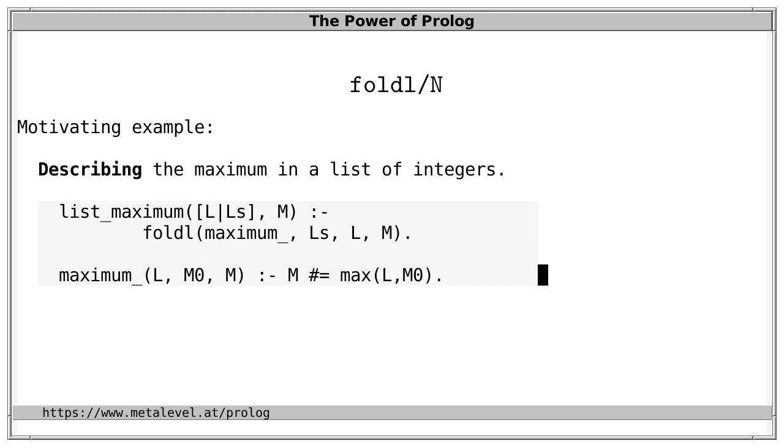So the metapredicate automatically calls the indicated goal with the necessary arguments so that this works exactly as before. So, every time you are reasoning about lists in this way, you can use foldL to shorten the code like this. Here's a sample query and corresponding answer.